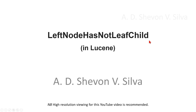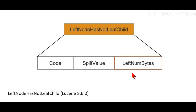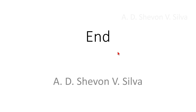Here you can see the left node has not leaf child in Lucene. It consists of a code split value and left number, which describes the meaning that the left node has no leaf child.